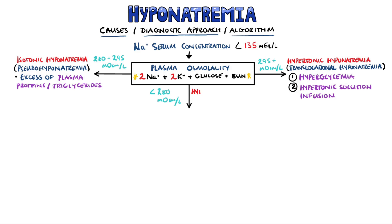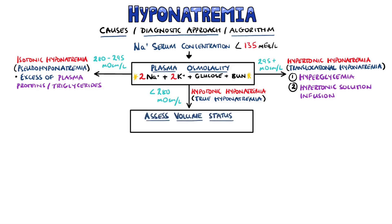If, however, the plasma osmolality is low, then you have a true hyponatremia. In this case, the next step is to assess the volume status of the patient. You can look at things such as the skin turgor, status of the mucous membranes, blood pressure, and even using ultrasound to look at the status of the inferior vena cava, which is a marker of the hydration of a patient.